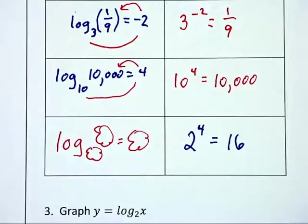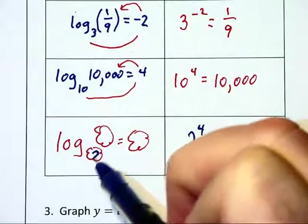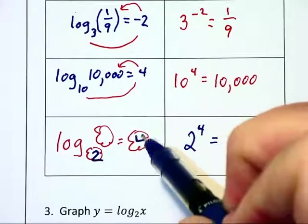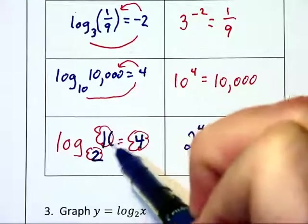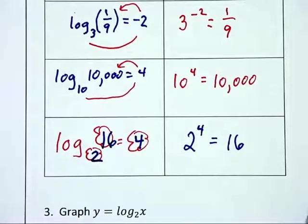I'd like to say log base something of something equals something. And then I still use that same process there and I say here's my base 2, there's my fourth power, there's my 16 inside the argument of the logarithm.